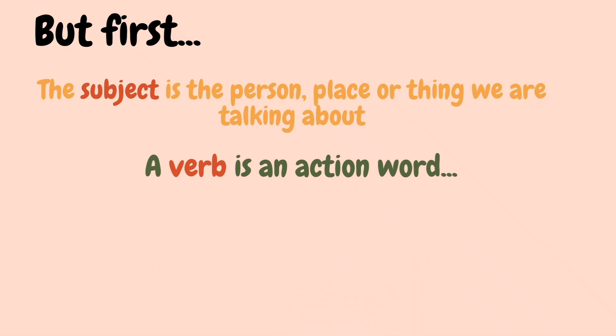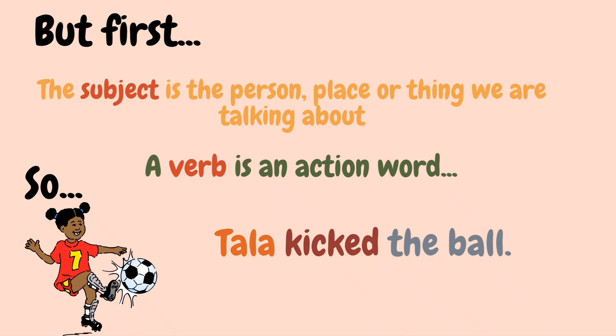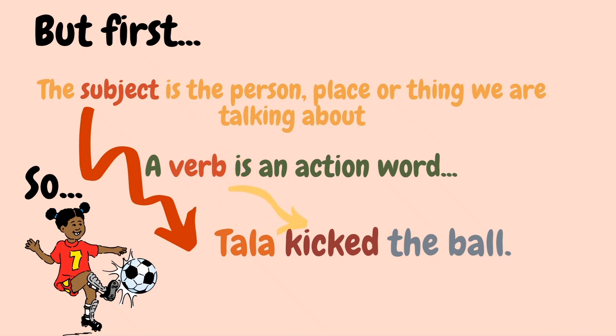A verb is an action word, or a doing word, like play, dance, or go. In the sentence 'Tala kicked the ball,' the subject is Tala because the sentence is about her — she's the one doing the action. And the verb is 'kicked' because that's the action that she does.